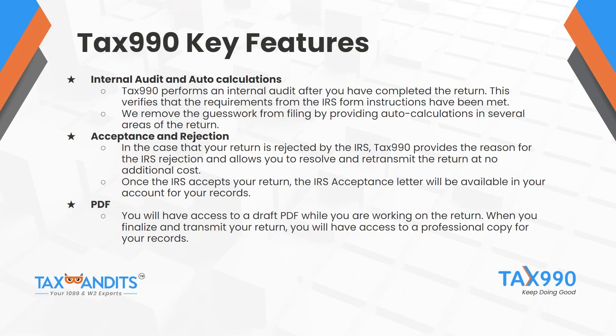It's important for an organization to know if the return was accepted, so once the IRS provides a status update, you'll receive an email with an acceptance notice. You can email that acceptance notice to your client if necessary, and the acceptance letter will remain in the Tax 990 account to be accessed and downloaded at any time. In the case that a return is rejected by the IRS, Tax 990 provides the reason for the rejection and allows you to resolve and retransmit the return at no additional cost.